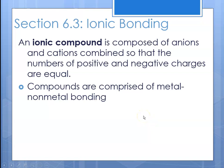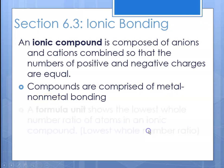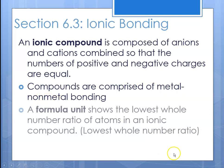These ionic compounds are comprised of metal-nonmetal bonding. Metals have a tendency to lose electrons, and nonmetals have a tendency to gain electrons. Metals have low electronegativity and nonmetals have high electronegativity.